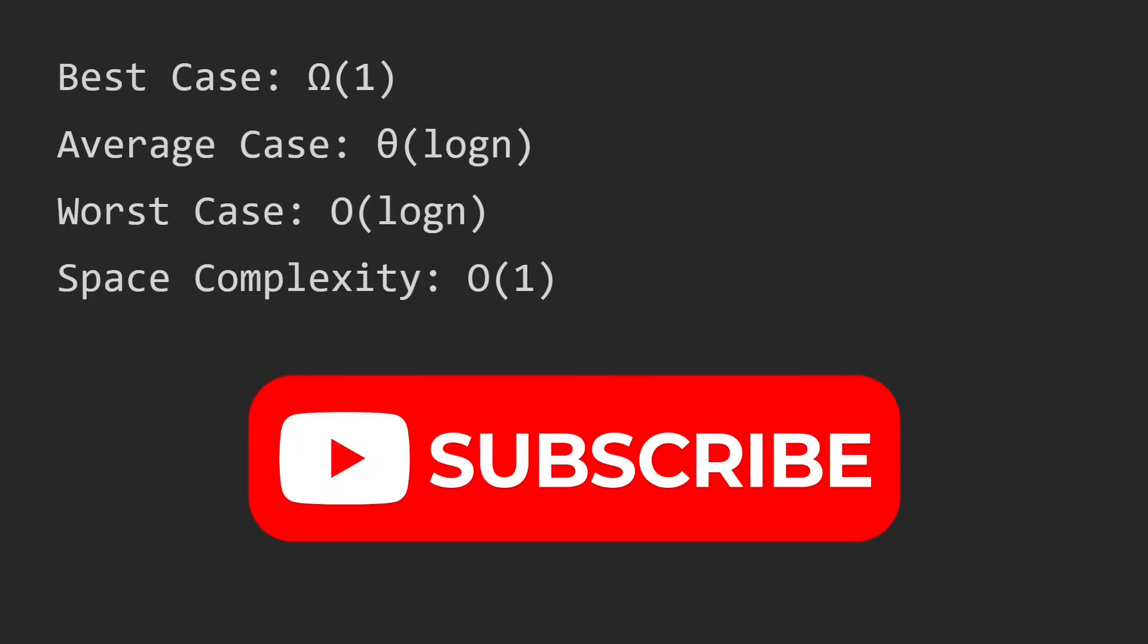For example, you have an array with 27 numbers. The second iteration, you get 9 and then 3 and then 1, right? So that is log base 3 of n. So that's why the average and worst cases are O(log n). And ternary search does not create extra space. So the space complexity is O(1).